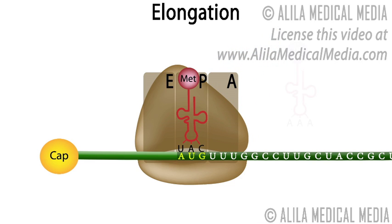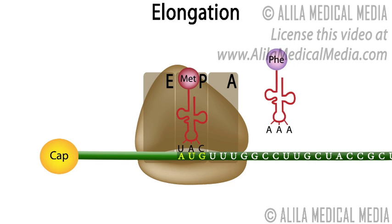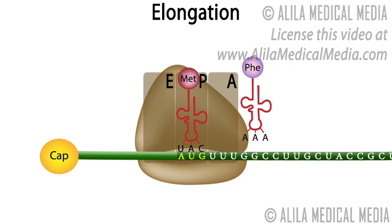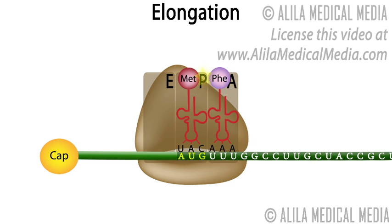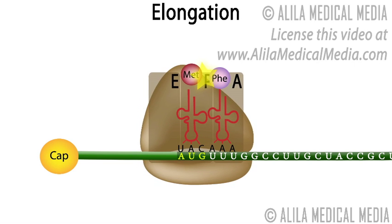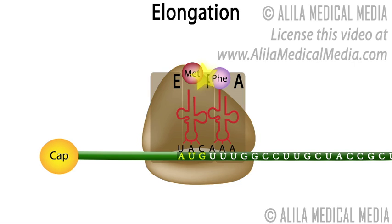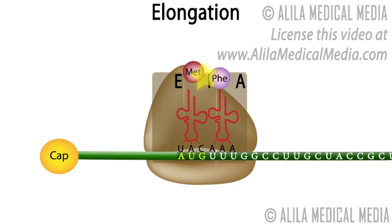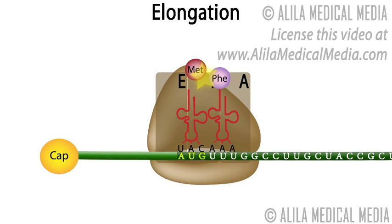When the right amino acid tRNA enters the A site, a peptide bond is made between the two now adjacent amino acids. As the peptide bond is formed, the tRNA in the P site releases the amino acids onto the tRNA in the A site and becomes empty.